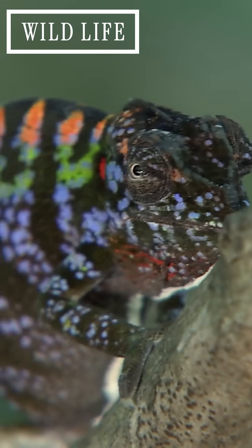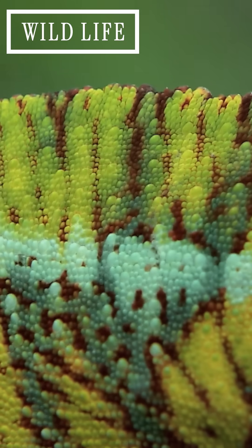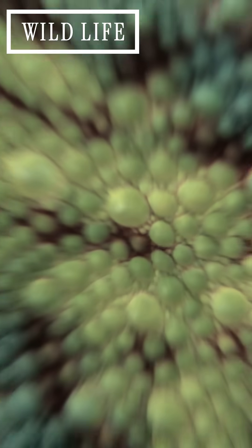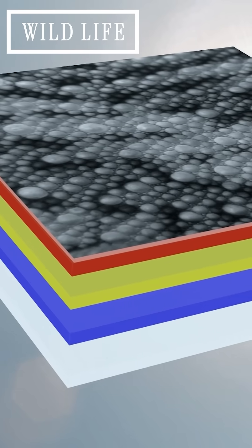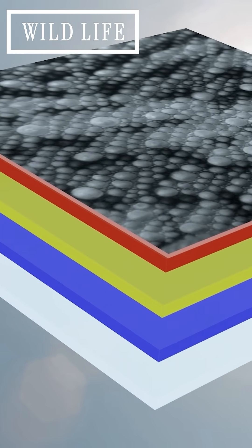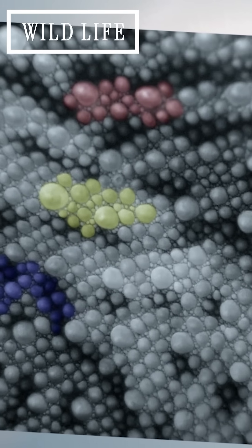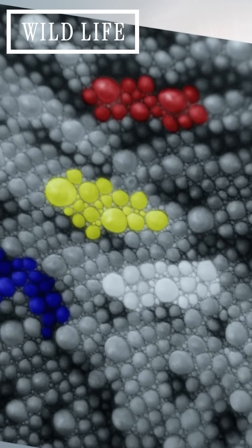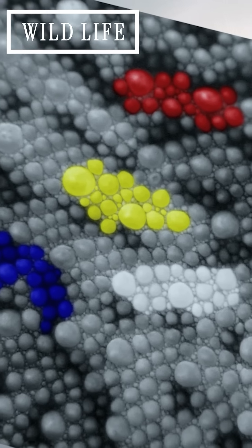The colour change happens in the most ingenious manner. The chameleon skin consists of four different layers, containing specific primary colour pigments. Colour change happens by widening and reducing windows in the skin to reveal more or less of a specific colour.